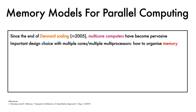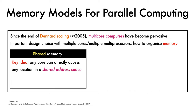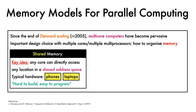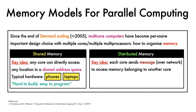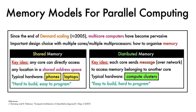In shared memory, the key idea is that each core can directly access any location in a shared address space. This is typically the model employed on hardware like phones and laptops. Shared memory can be thought of as hard to build, easy to program. An alternative is distributed memory, where each core sends a message over a network to access memory belonging to another core — there is no shared address space. This is typically employed on hardware like compute clusters, and in contrast to shared memory, it is easy to build but hard to program.